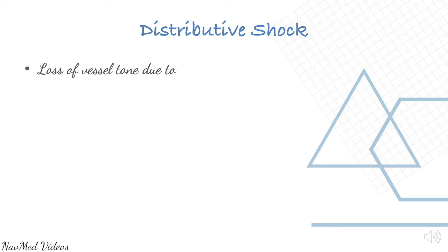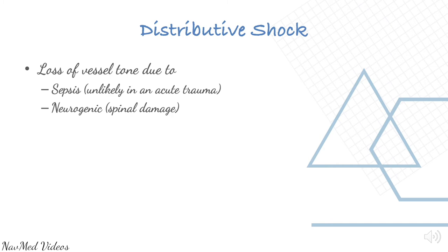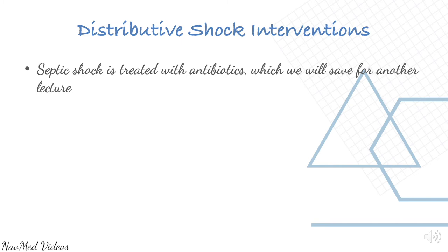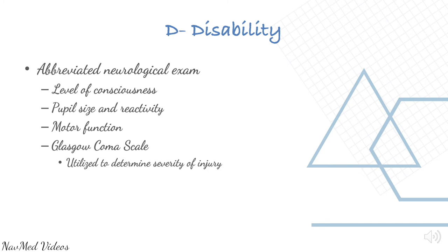Distributive shock is loss of vessel tone due to sepsis or neurogenic shock. Septic shock and neurogenic shock fall under distributive shock. The patient will usually have dry, warm skin and bradycardia. Interventions: if septic, treat with antibiotics. Disability involves an abbreviated neurological exam: level of consciousness, pupil size and reactivity, motor function. The Glasgow Coma Scale is utilized to determine severity of injury.